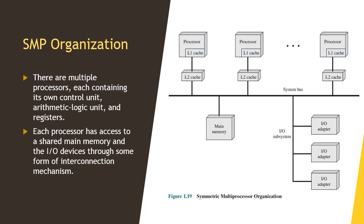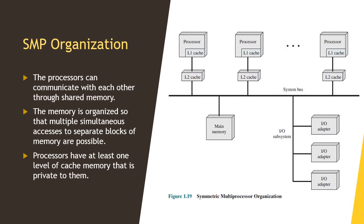In this picture of a symmetric multiprocessor, there are multiple processors each containing its own control unit, arithmetic logic unit, and registers. Each processor has access to a shared main memory and I/O devices through some form of interconnection mechanism — a shared bus is a common facility. The processors can communicate with each other through shared memory: the sending processor writes data to shared memory and the receiving processor reads it.